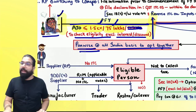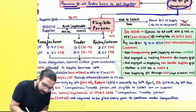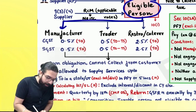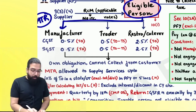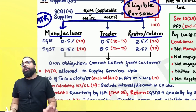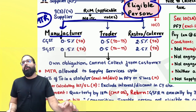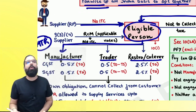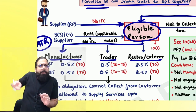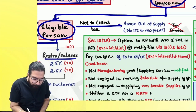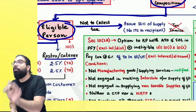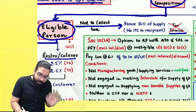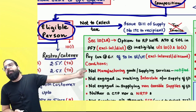Who are the people eligible for Composition Scheme? MTR — M for Manufacturer, T for Trader, R for Restaurant and Catering. These are the people eligible. If I take Composition Scheme, when I buy from a registered person I will not take any ITC. When I supply, I will issue a Bill of Supply — never a tax invoice. The front party also will not get any credit.